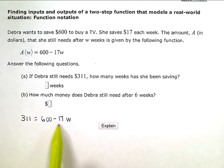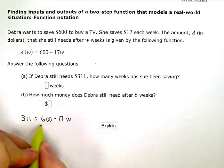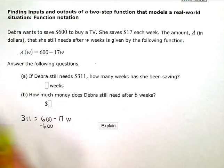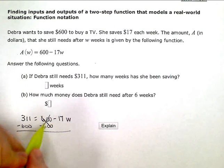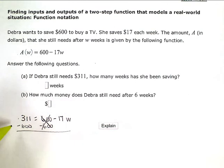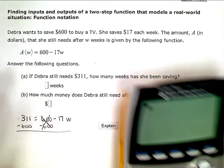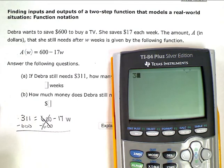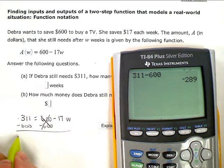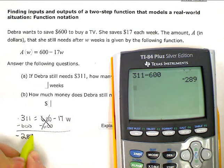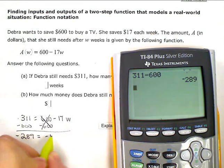Before I work on any numbers attached directly to the w or the coefficient, I want to get rid of any other terms on this same side. So I'm going to zero out this $600, balance my equation by doing the same thing on the other side. 311 minus 600 gives me negative 289 is equal to negative 17w.